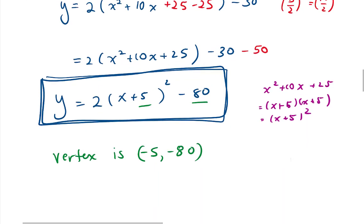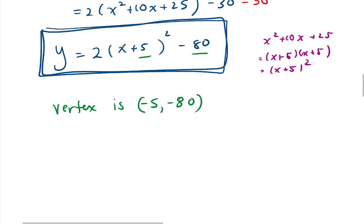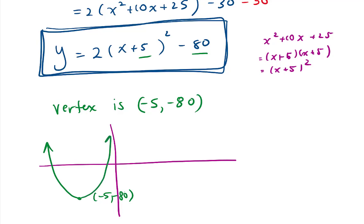And same as above, if I want to sketch this graph, I can take the vertex, which is negative 5 and negative 80, and then I know the parabola opens up because the a value is positive. So there is a rough sketch of this parabola.